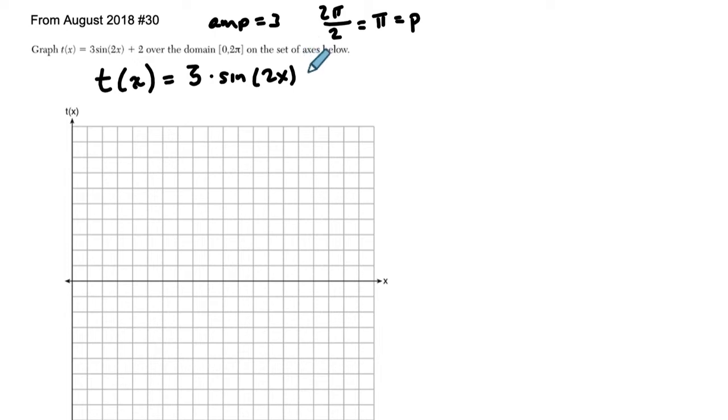And then plus 2, that's our midline here. It's a vertical translation up, and the midline's 2. So let's just put that all together.